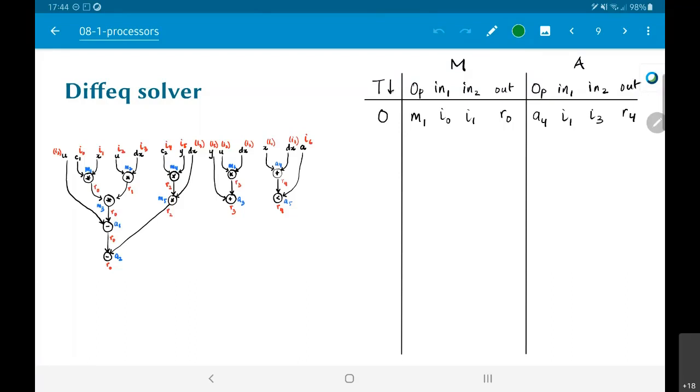So operation M1 is scheduled on the hardware M and operation A4 is scheduled on hardware A. What are the inputs to M1? It is I0 and I1, basically C1 and X.